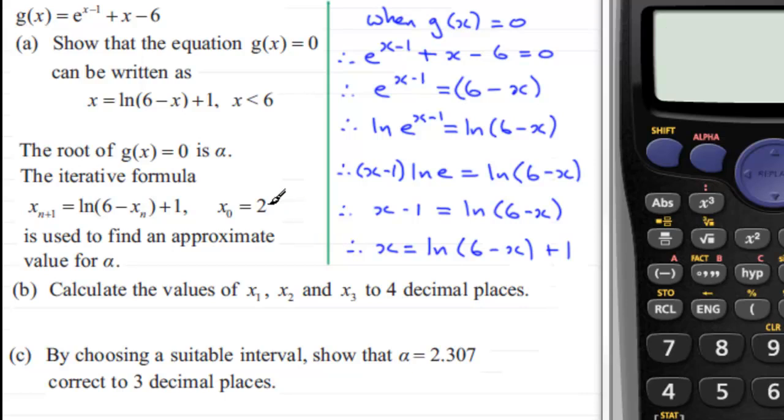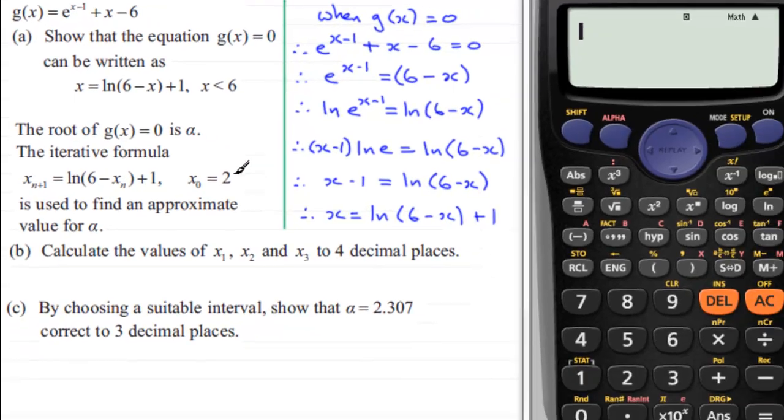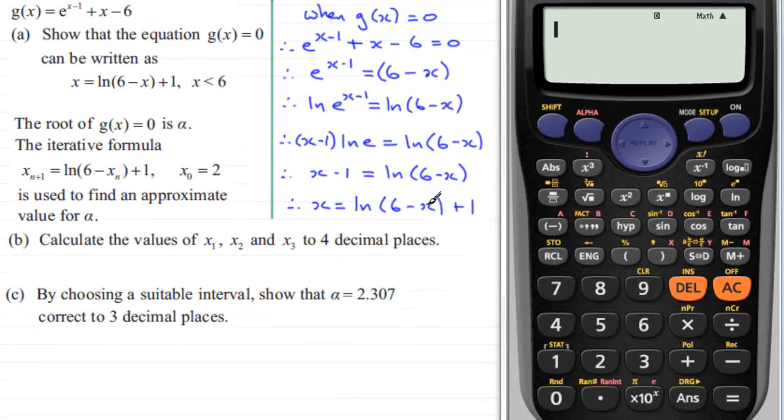Well on a calculator, what we do is we always put the first root in, our first approximation anyway, and that is x equals 2. So first of all, make sure your calculator is cleared by pressing the AC button, and then just enter 2 and press equals.